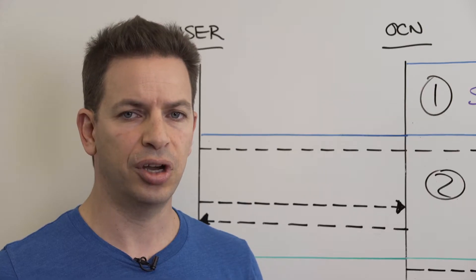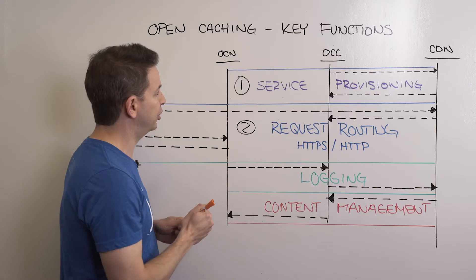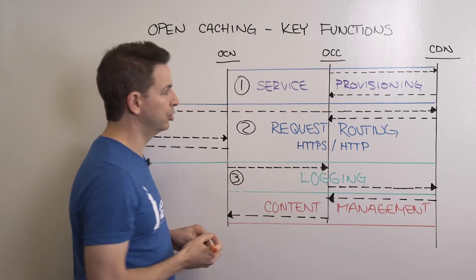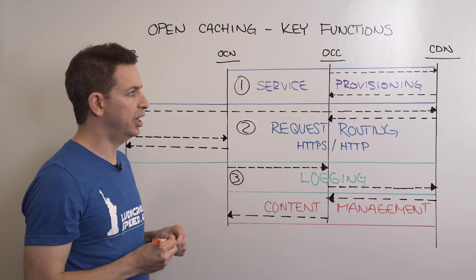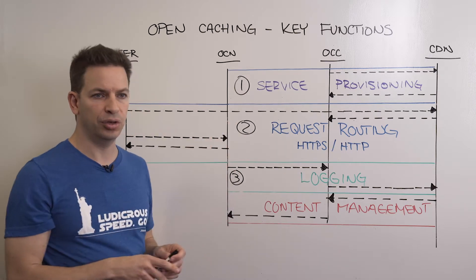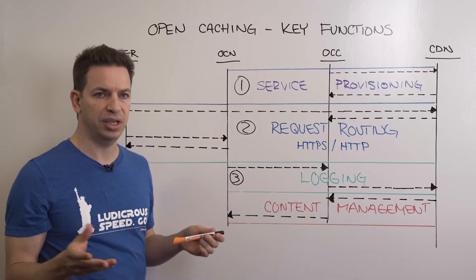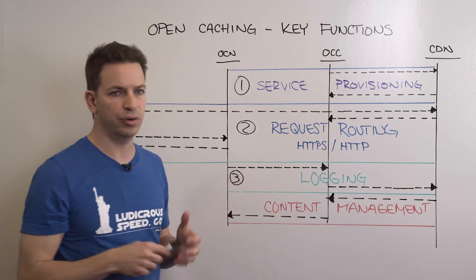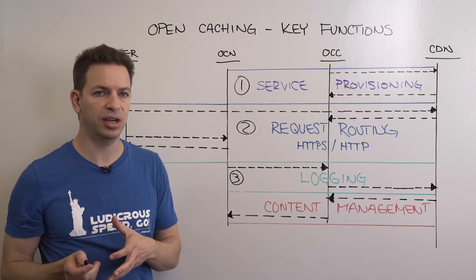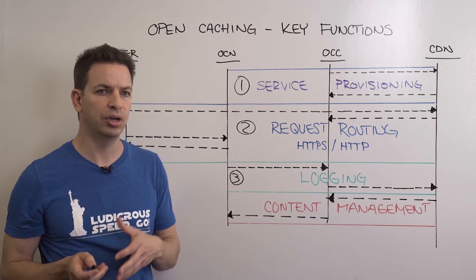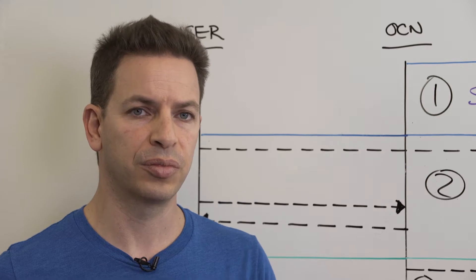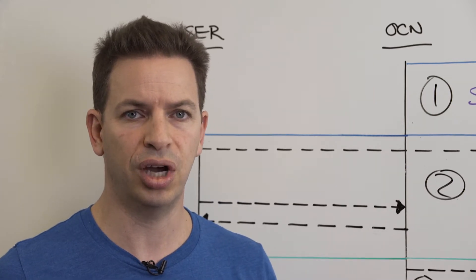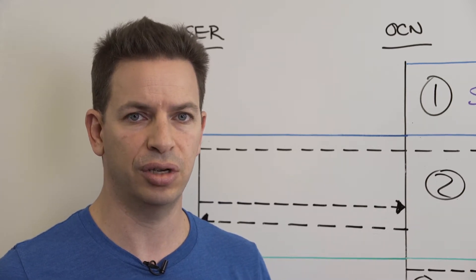After the content is delivered, the open caching system reports back to the delegating entity how the content was delivered, issuing logs that the CDN can use for purposes such as debugging the call flow, but also for billing the given publisher that was the original content provider in this equation.